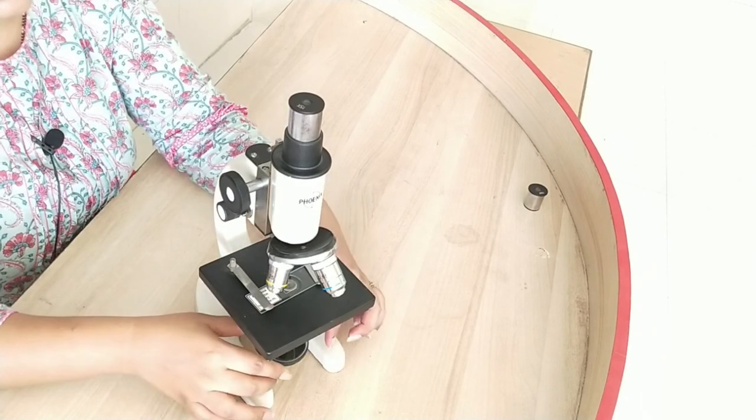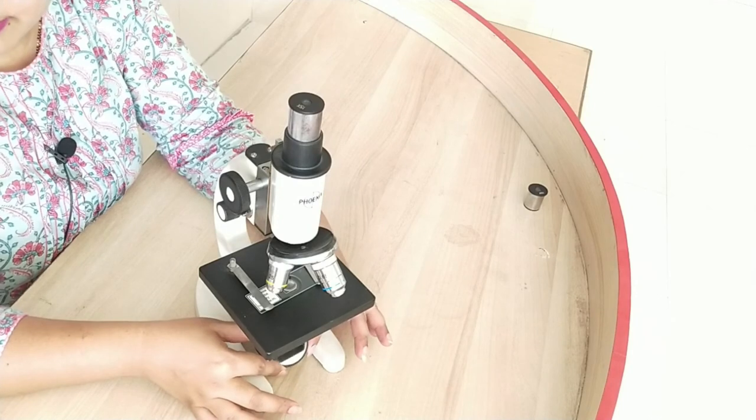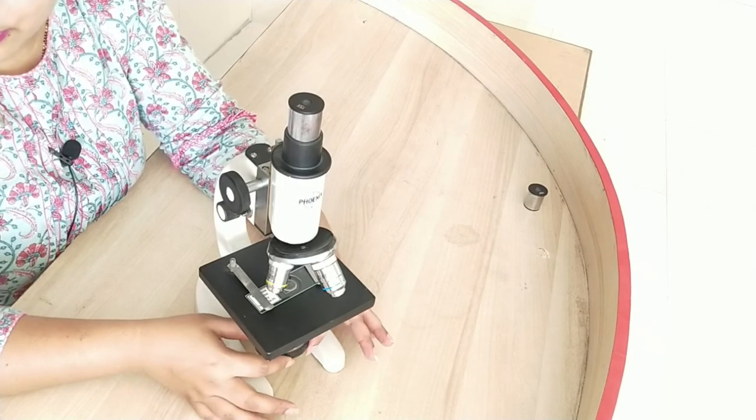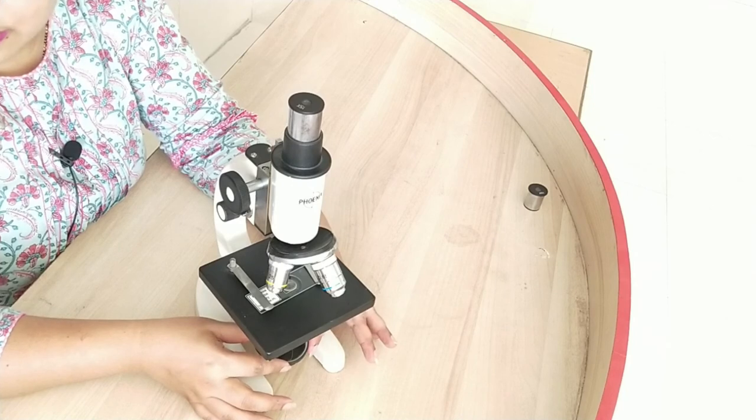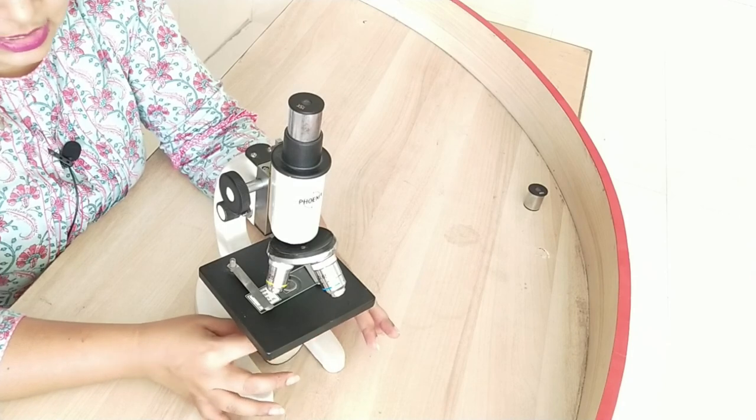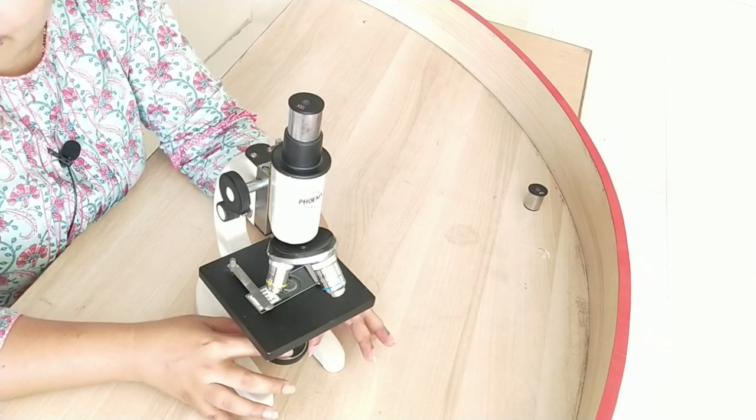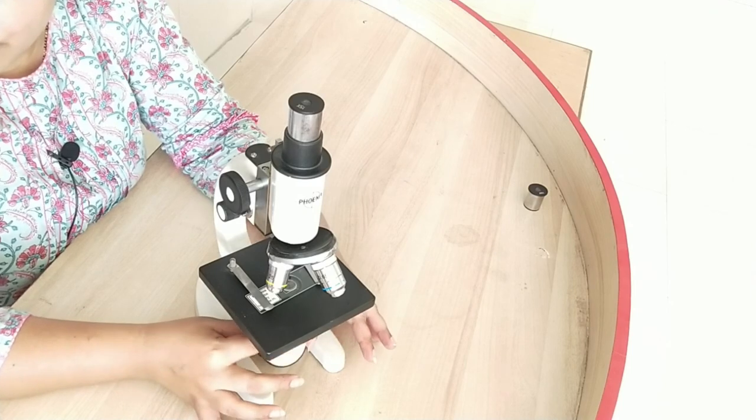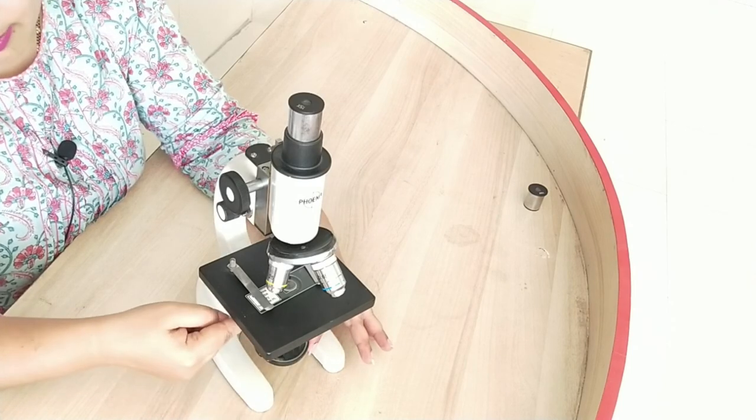Now the third optical part is the mirror. You can see that this mirror can be rotated. It consists of two types of mirror. One side has a plane mirror and the other side has concave mirror. We use these mirrors for reflection of light into the microscope.